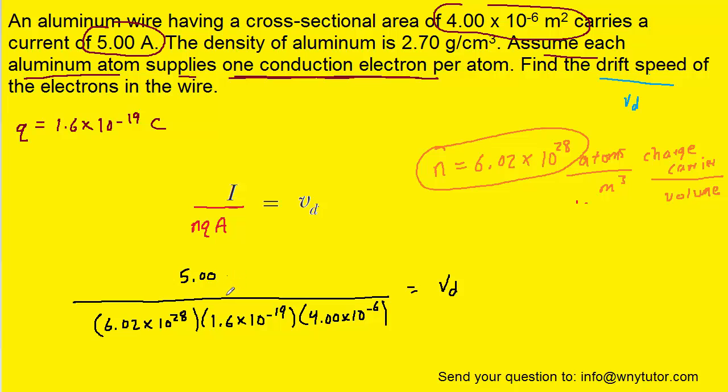So here are all the known values plugged in. We've omitted including the units just for simplicity. When you crunch that down on your calculator, you should get a drift speed equal to approximately 1.3 times 10 to the minus 4 meters per second. And that is indeed the correct answer.